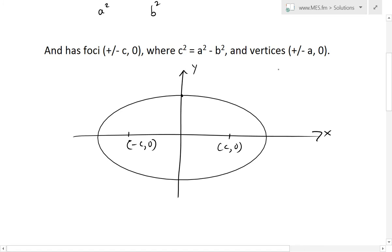Basically, it also has vertices of plus or minus a and 0, so at this point it's a and 0, and at this point it's negative a and 0. And then at this top point, this is just going to be 0 and b.